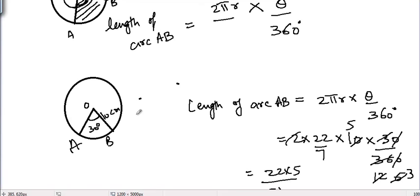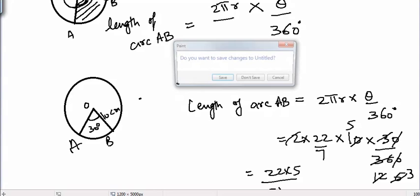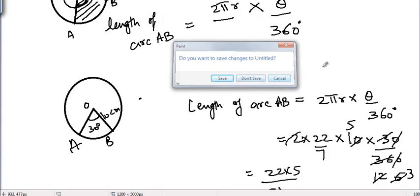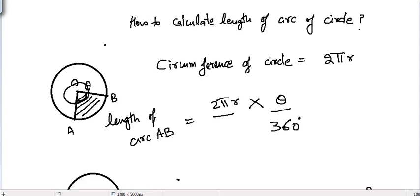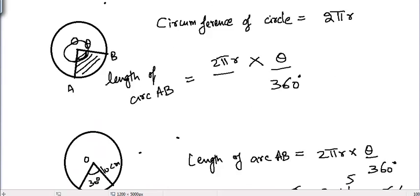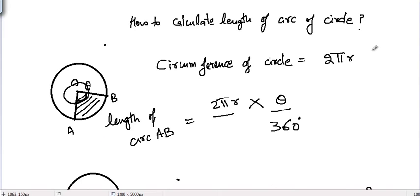We can find the length of any arc if we know the angle subtended at the center and the radius of the circle. That's how to find the length of an arc of a circle. I'll see you in the next video. Thank you.